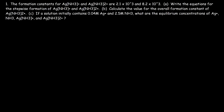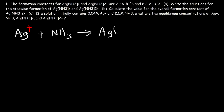Let's start with this problem. The formation constants for AgNH₃⁺ and Ag(NH₃)₂⁺ are 2100 and 8200. Write the equations for the stepwise formation of those two complex ions. So let's start with the first one. We have the silver cation reacting with ammonia, which in this reaction is known as a ligand. This produces the complex ion AgNH₃⁺ with a charge of plus 1. The equilibrium constant associated with this reaction is called K1.